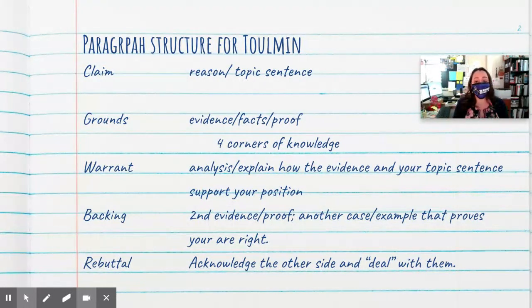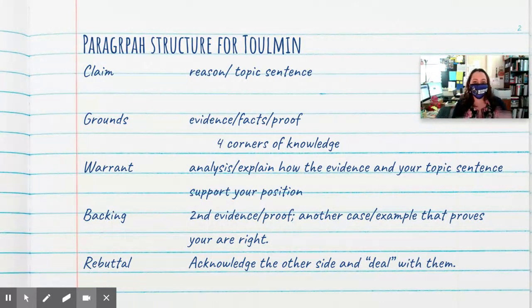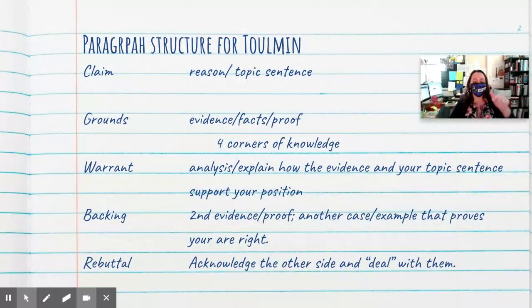So that rebuttal is what makes it Tolman. It's that acknowledging the other side. When it comes to our argumentative essays, this paragraph is going to be long, and that's okay because it's a conversation. It shows depth, insight, being provocative and insightful — so we want that. Your structure is: your reason, evidence, explain why you're right, second piece of evidence, explain why you're right, acknowledge the other side and deal with the other side.